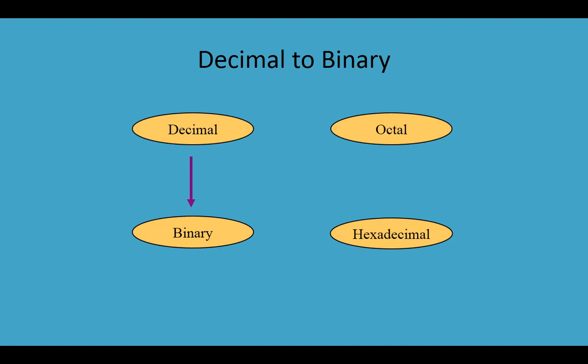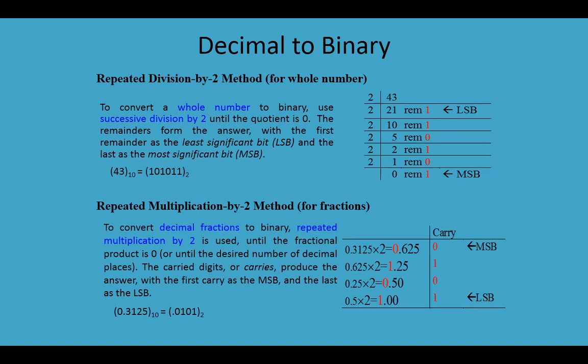Binary's two digits — 0 and 1 — are called bits. Decimal numbers are of two types: one is integer and the second is non-integer. Non-integers are also called fractions or decimals. The method to convert an integer into binary and the method to convert a non-integer (fraction) into binary are different.